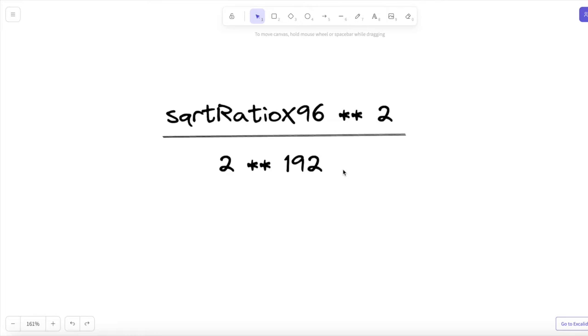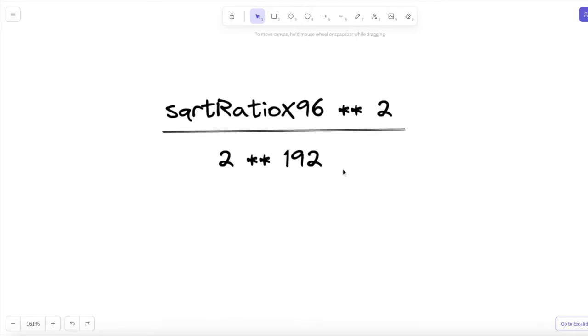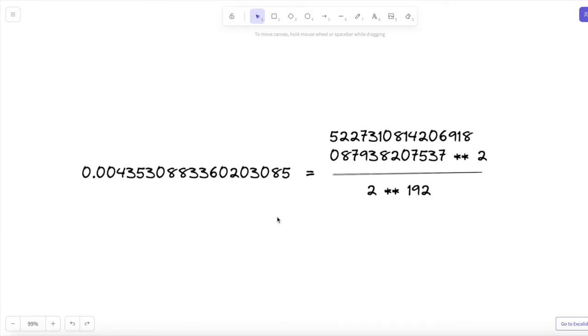And that gives us our human readable price ratio. Let's see it with example values from the pool. So we take our square root ratio x96 value and we multiply it by itself, so 52273, etc., multiplied by itself, or to the power of 2.